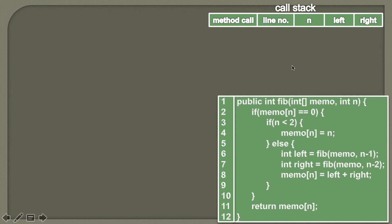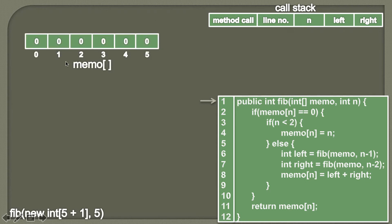As this is a recursive solution, we will see a demonstration using the call stack. Let's say we want to calculate the fifth Fibonacci number. We'll simply pass an empty array with size five plus one, which is six, because the indexes of the array start from zero. This memo table will store our Fibonacci numbers from one to five, and the value stored at the fifth index will be our answer. Therefore, we are creating an array of size six. In the first step, we have an array of size six having the default value zero. On the call stack, you will see the fib function has started execution with a value of n as five, and the integer array has all values as zero.